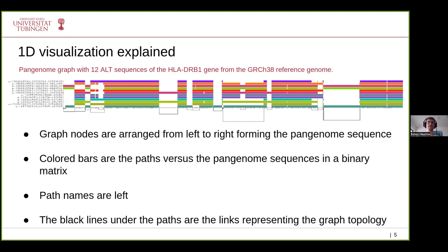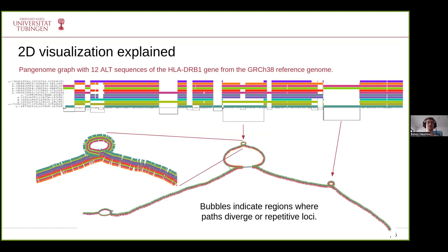What is not clearly understandable in 1D is the graph topology, so there is also a way to visualize these things in two dimensions. This is extremely important to easily grasp large structural variations, but also to look at certain bubbles which can indicate regions where paths highly diverge or hint at repetitive sequences. These are the key concepts to understand all the visualizations coming in this presentation.